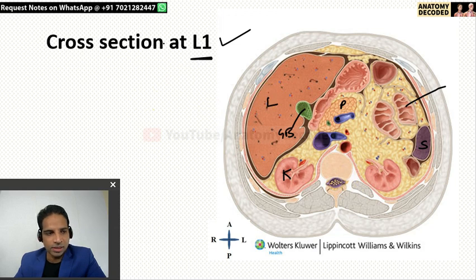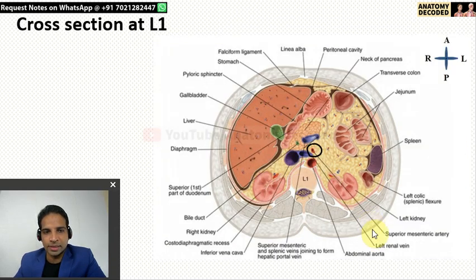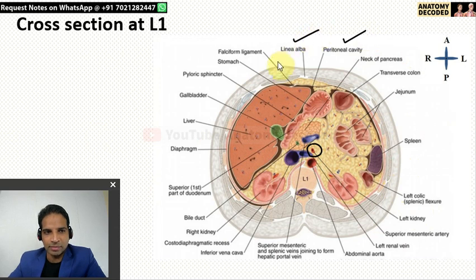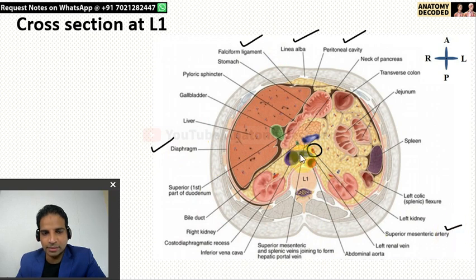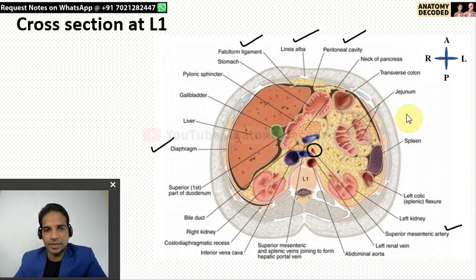There is one labelled image for this section — you can go through all the labelling. There are some additional labels also shown in this image: the peritoneal cavity, linea alba, and the falciform ligament which connects the anterior aspect of the liver to the anterior abdominal wall. The diaphragm is also labelled. There is one artery labelled here — the superior mesenteric artery, which is a branch of the anterior branch of the abdominal aorta.